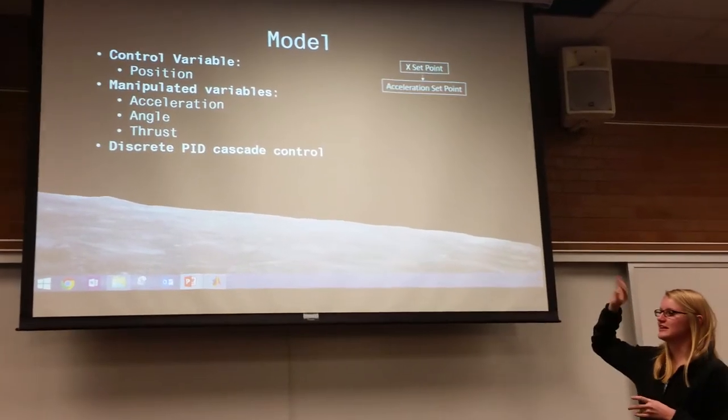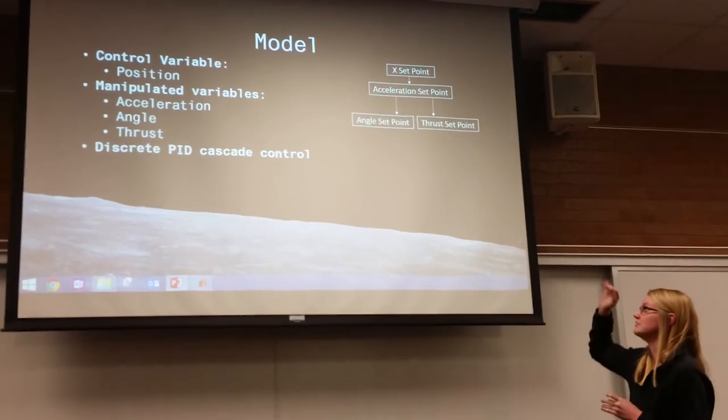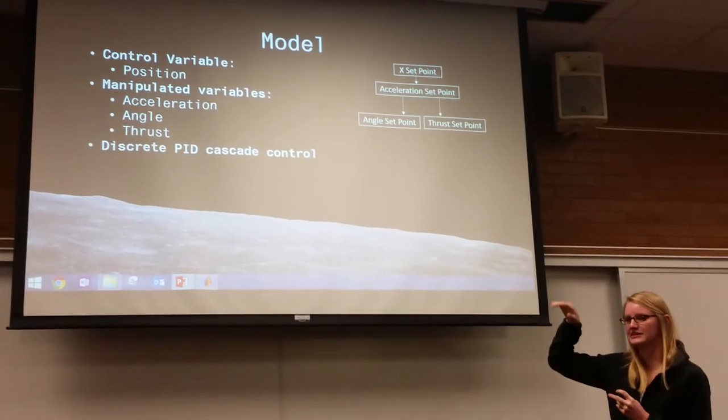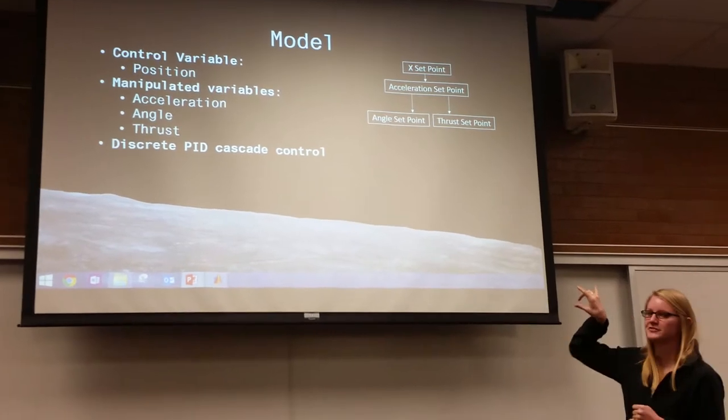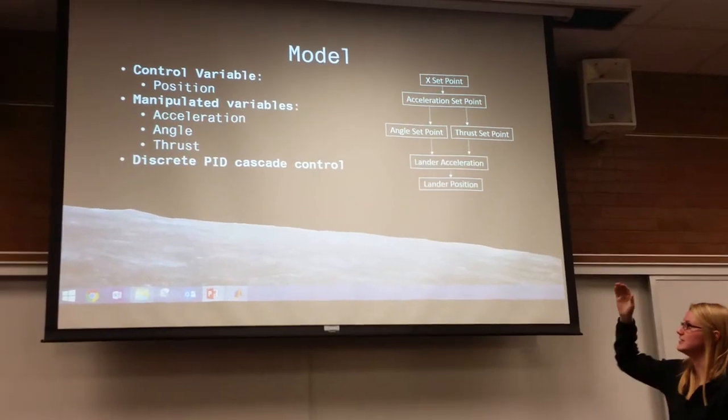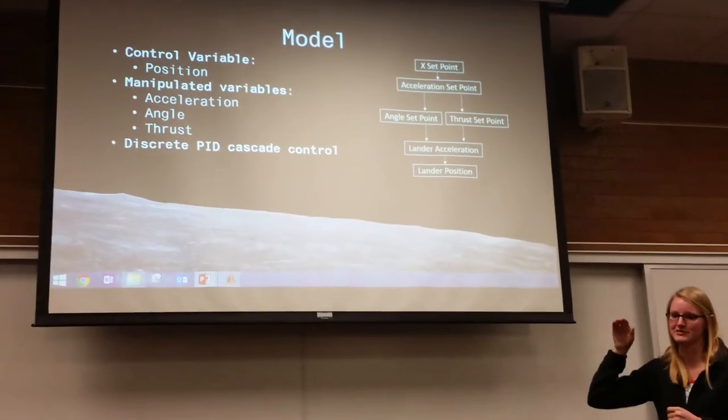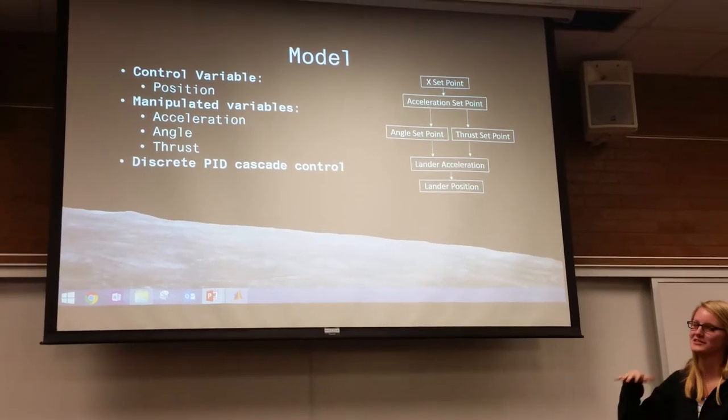In a little graphic you can see, we had our X setpoint the entire time, and with that we knew what acceleration we wanted. And then using those, we put setpoints for our angles and our thrusts, and then used those to find our actual acceleration, which put us to the position we wanted.